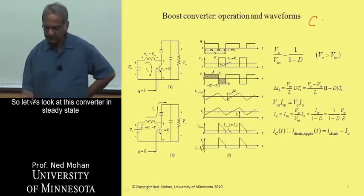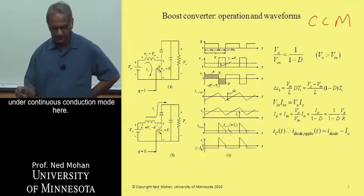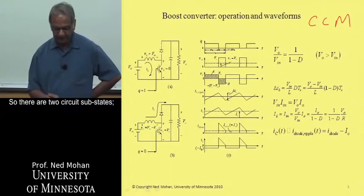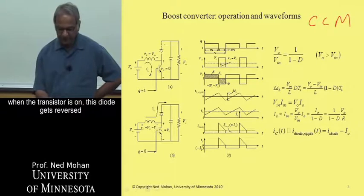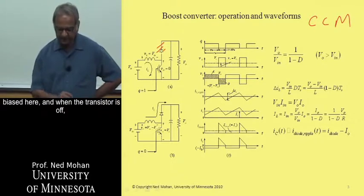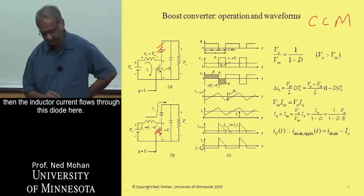Let's look at this converter in steady state under continuous conduction mode. There are two circuit sub-states. When the transistor is on, this diode gets reverse biased here, and when the transistor is off, then the inductor current flows through this diode here.